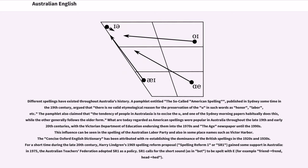Different spellings have existed throughout Australia's history. A pamphlet entitled The So-Called American Spelling, published in Sydney sometime in the 19th century, argued that there is no valid etymological reason for the preservation of the U in such words as honour, labour, etc. The pamphlet also claimed that the tendency of people in Australasia is to excise the U, and one of the Sydney morning papers habitually does this, while the other generally follows the older form. What are today regarded as American spellings were popular in Australia throughout the late 19th and early 20th centuries, with the Victorian Department of Education endorsing them into the 1970s and the Age newspaper until the 1990s. This influence can be seen in the spelling of the Australian Labour Party and also in some place names such as Victor Harbor. The Concise Oxford English Dictionary has been attributed with re-establishing the dominance of the British spellings in the 1920s and 1930s.